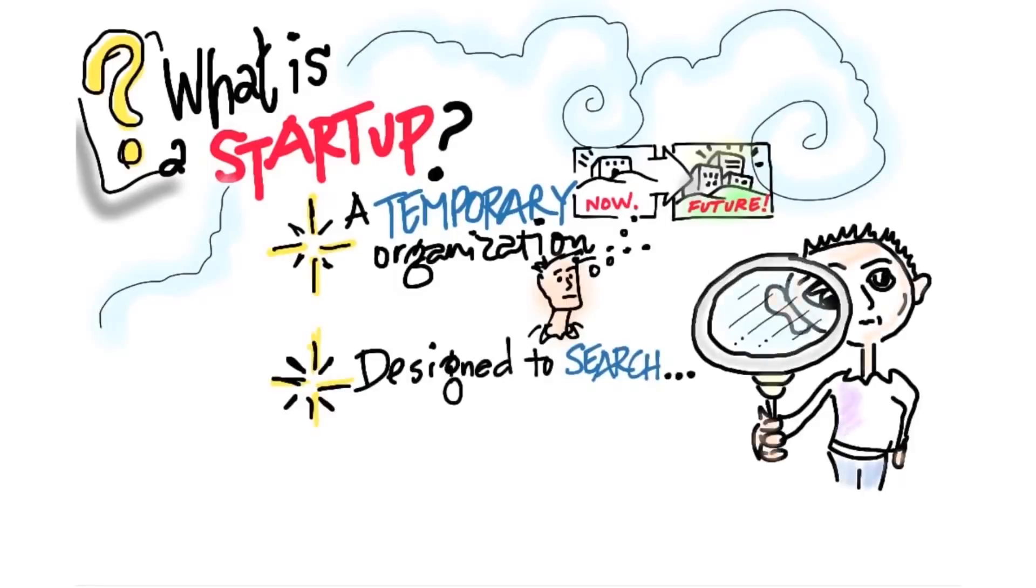Well, number one, you want to search for something that's repeatable, and repeatable means the same thing that works on Monday works on Wednesday and works on Friday, and works next week and works the next month. That is, I want to find sales and marketing and engineering processes that are repeatable. I also want to find them scalable.